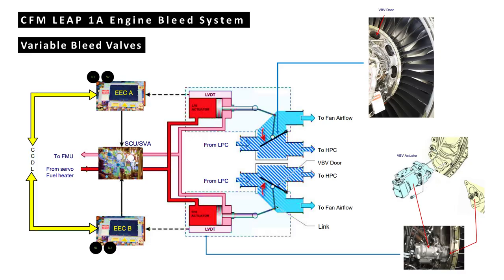The variable bleed valves: The function of the variable bleed valves (VBV) is to avoid surge in the booster or low pressure compressor and match the pressure into the high pressure compressor at lower and transient speed. The inputs used by the EC for controlling the VBVs are N1 and N2.